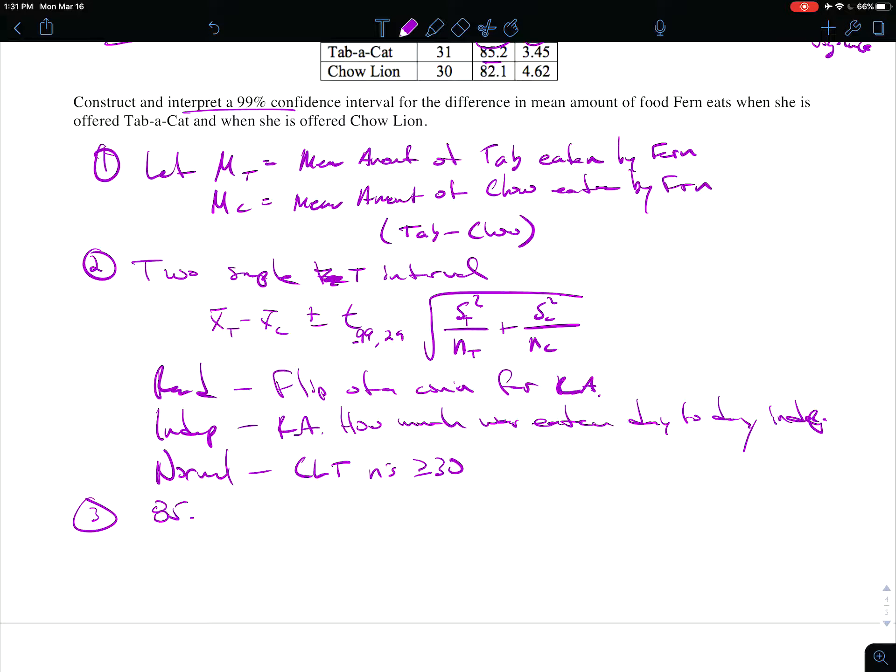We'll try and keep everything on the page here: 85.2 minus 82.1 plus or minus the t, 2.756. So we'll go with the table value for the conservative degrees of freedom. And now is the time for 3.54 squared over 30 plus 4.62 squared over 31.